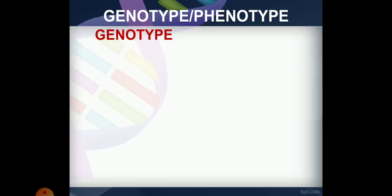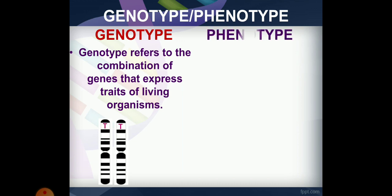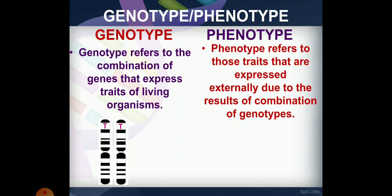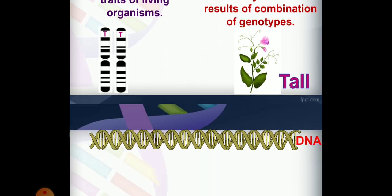This leads to genotype and phenotype. Genotype refers to the combination of genes — the genetic constitution — that expresses traits of living organisms. Phenotype refers to the external appearance. The genetic makeup is the genotype; the physical appearance is the phenotype.